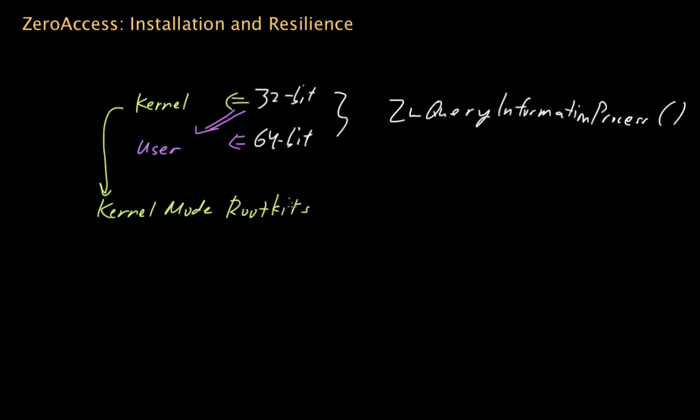But effectively, what the ZeroAccess Trojan did is it would basically take an existing kernel mode driver, and it would create a copy of that kernel mode driver, and then it would overwrite the original driver and have its own code loaded into kernel space. And then it used kernel mode hooks so that anybody who was trying to examine the original driver would get that legitimate one instead.